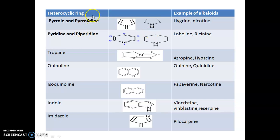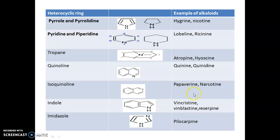True alkaloids are classified depending upon the nature of the ring present in their structure. Pyrrol and pyrrolidine alkaloids include hygrine and nicotine. Pyridine and piperidine alkaloids include lobeline and resin. Tropane alkaloids are very important — examples include atropine, hyoscine, and hyoscyamine. Quinoline alkaloids have the quinoline heterocyclic ring, as seen in quinine and quinidine; cinchona alkaloids contain this quinoline structure. Isoquinoline alkaloids include papaverine and narcotin, which are obtained from opium.